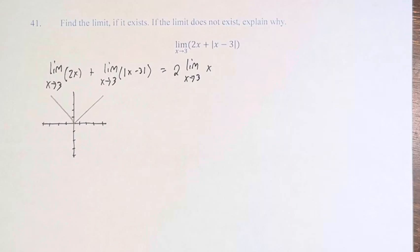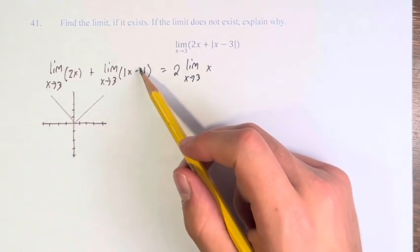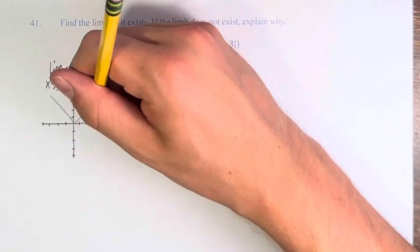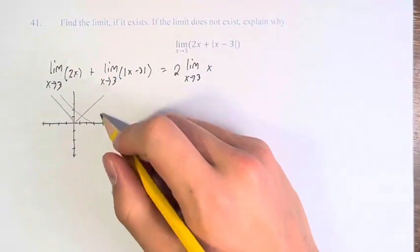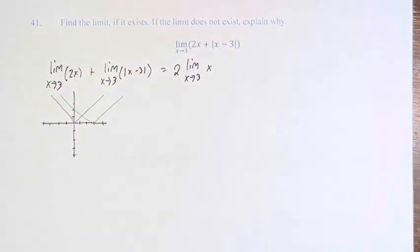And we know from the transformations we learned in the last chapter that if you're subtracting 3 within the function, you're moving it 3 units to the left—sorry, to the right. Which is going to look a little something like this. It's not a perfect graph, but it does.